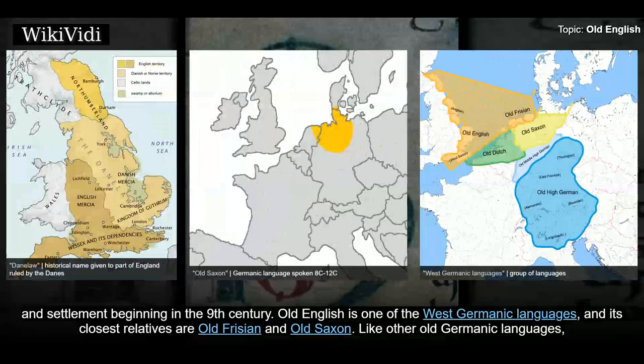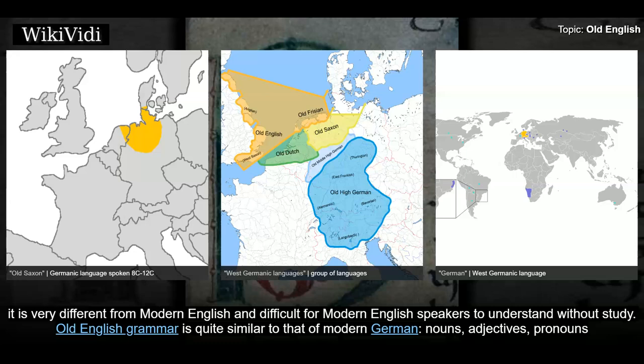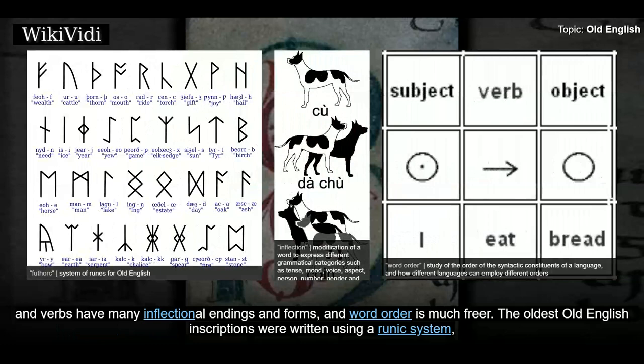Old English is one of the West Germanic languages, and its closest relatives are Old Frisian and Old Saxon. Like other Old Germanic languages, it is very different from Modern English and difficult for Modern English speakers to understand without study. Old English grammar is quite similar to that of Modern German — nouns, adjectives, pronouns, and verbs have many inflectional endings and forms, and word order is much freer.